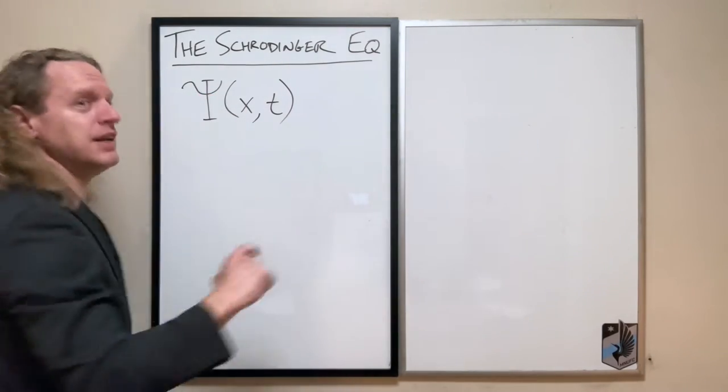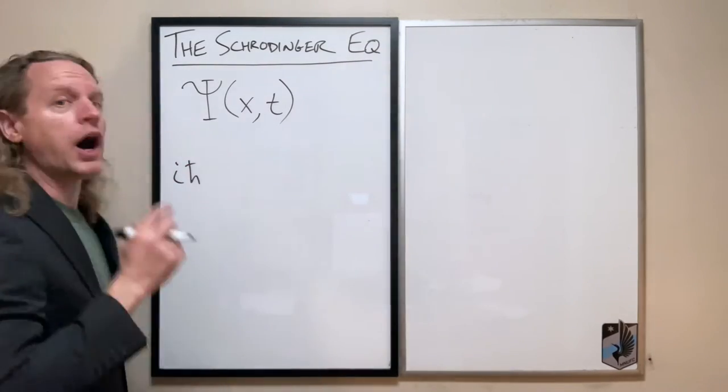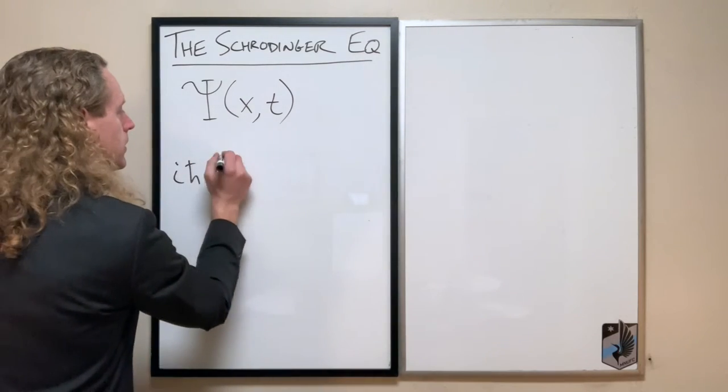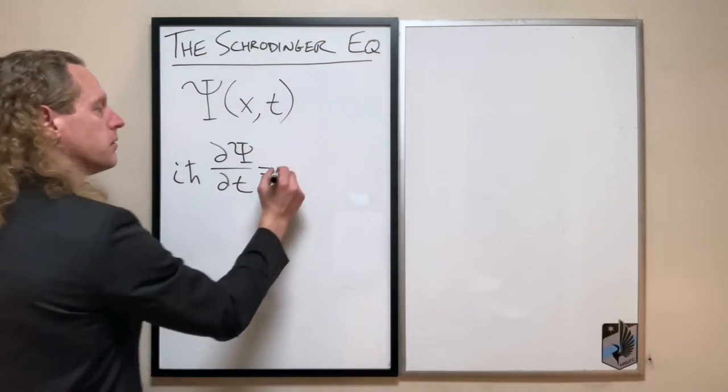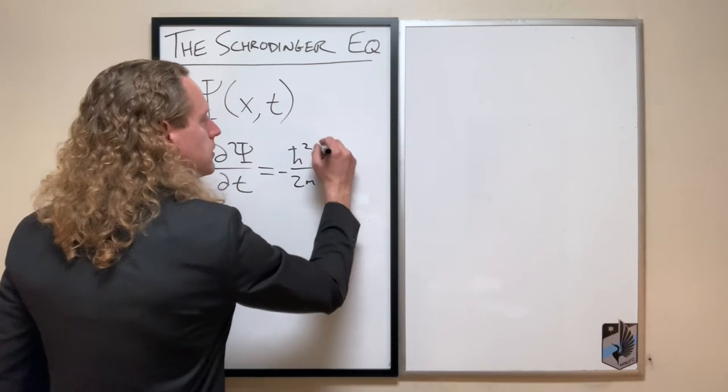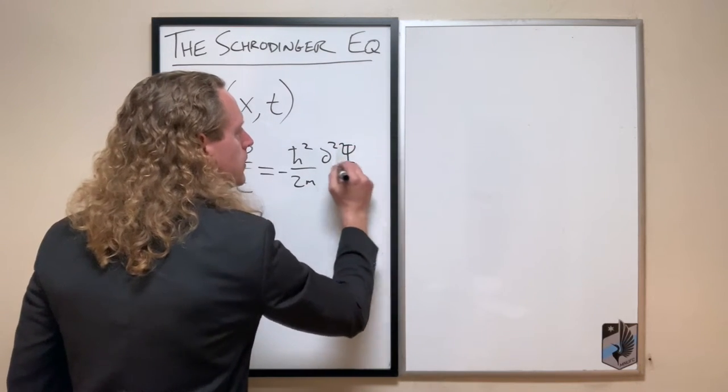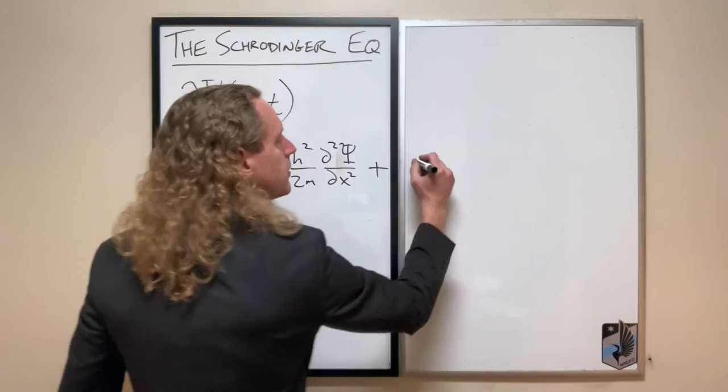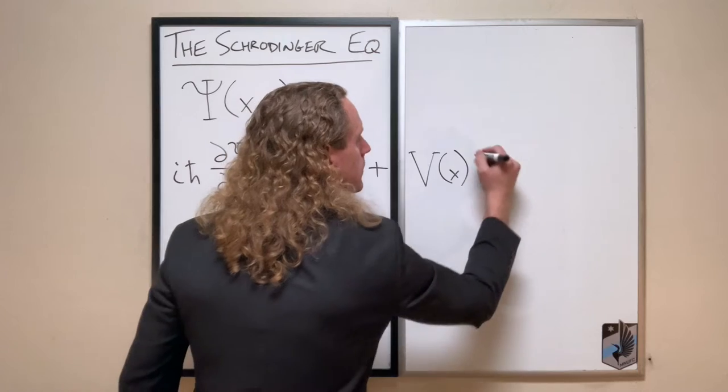So the next thing I'm going to write is, in fact, the Schrödinger equation. i ℏ ∂Ψ/∂t equals minus ℏ squared over 2m ∂²Ψ/∂x² plus—now, i is the imaginary letter or the imaginary variable squared of minus one.